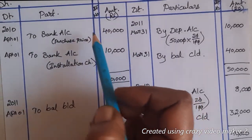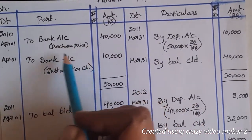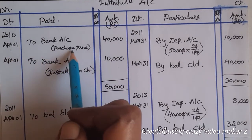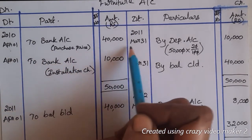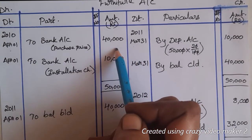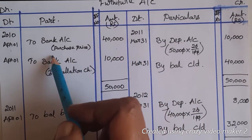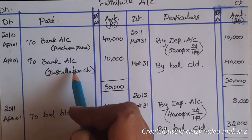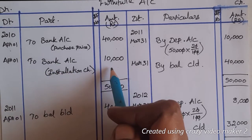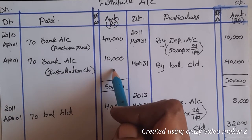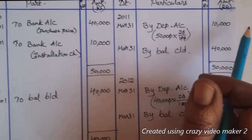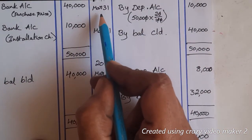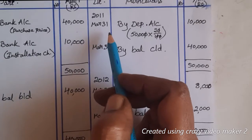Now let's write the furniture account. On 1st April 2010, we debit the bank account with ₹40,000 for the purchase. On the same date, we debit the bank account again with ₹10,000 for installation charges.